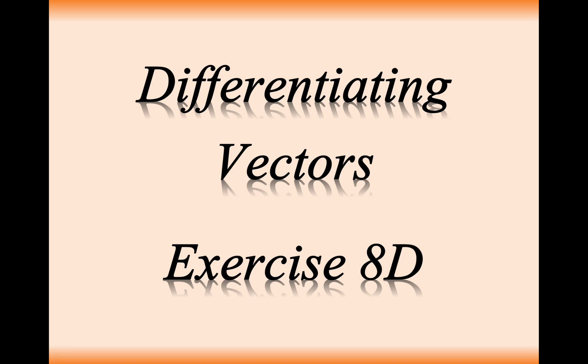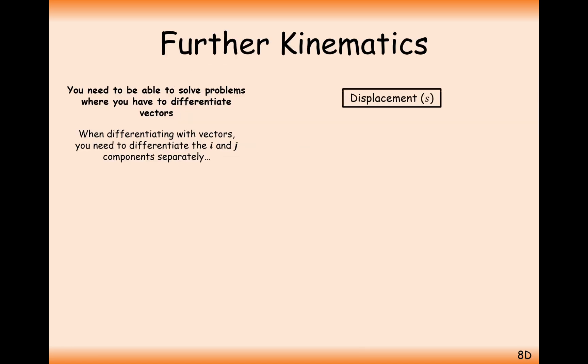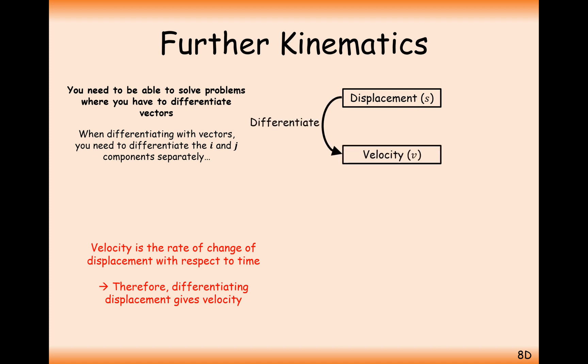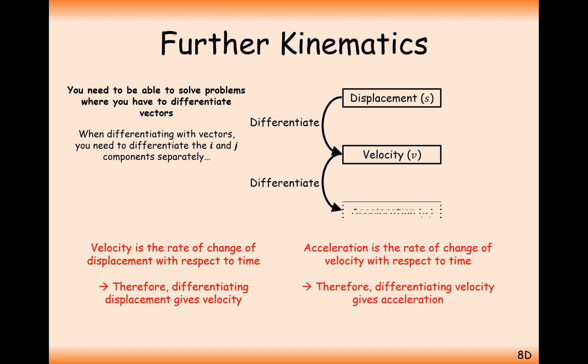We're looking at differentiating vectors with respect to displacement, velocity, and time. If we think about the rate of change of displacement, that's equal to the velocity. And if we think of the rate of change of velocity, that's equal to acceleration. So that's how we're going to be using differentiation here. We're going to be doing it with vectors. We're going to have an I component to our displacement or velocity, and we have a J component to our displacement or velocity. And we're just going to differentiate both parts of that.